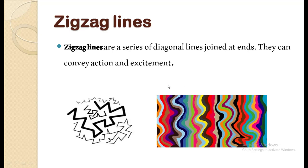Now, come to the next line, zigzag lines. Zigzag lines are a series of diagonal lines joined at ends. They can convey action and excitement. Aap lines deekh sakte hai. These are zigzag lines. You can see the drawing as well.